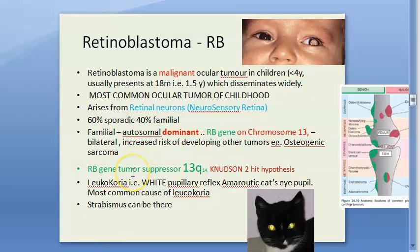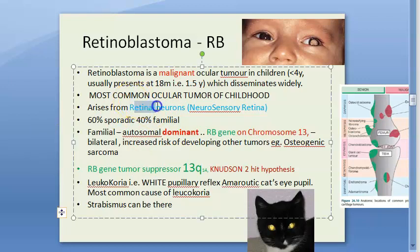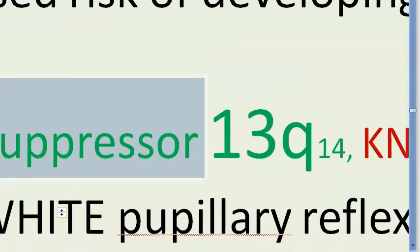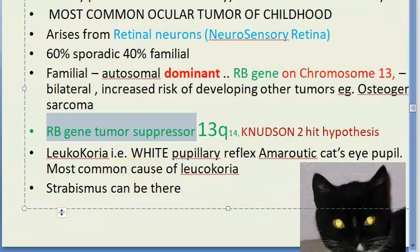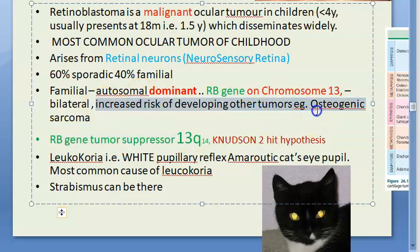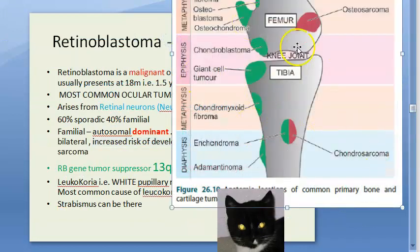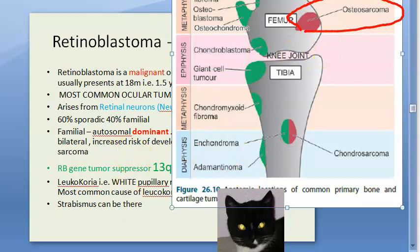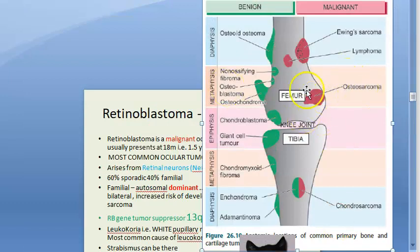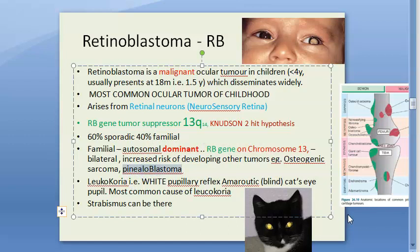Summary so far: retinoblastoma is a malignant ocular tumor in children under four years, presenting around 1.5 years. It arises from retinal neurons of the neurosensory retina. It can be familial and autosomal dominant, making it bilateral. The RB tumor suppressor gene on chromosome 13 is affected. These patients are also at increased risk of developing osteogenic sarcoma - affecting the metaphysis, such as near the femur at the knee joint - and pinealoblastoma.